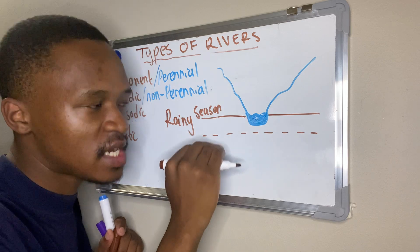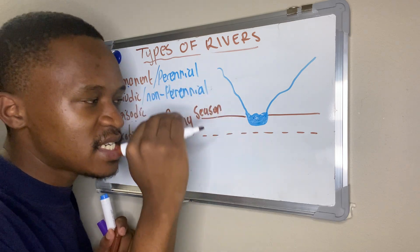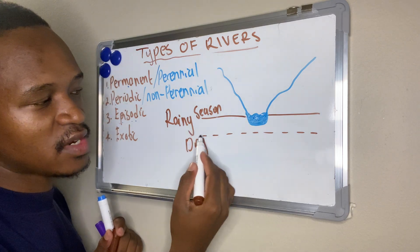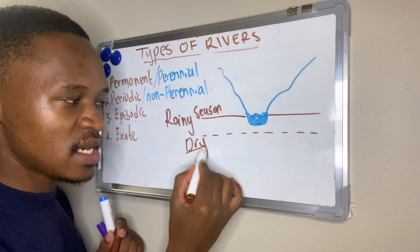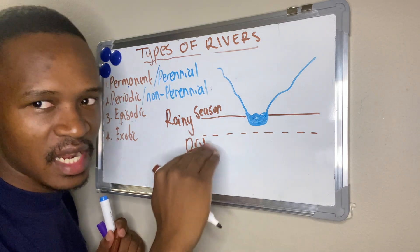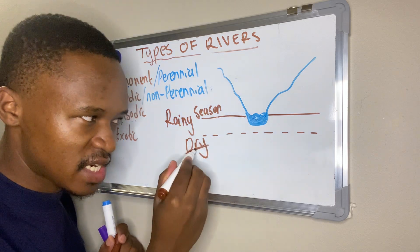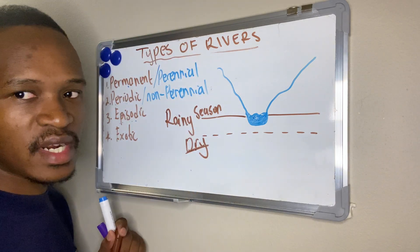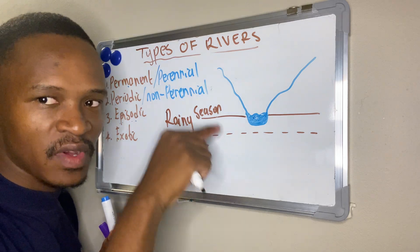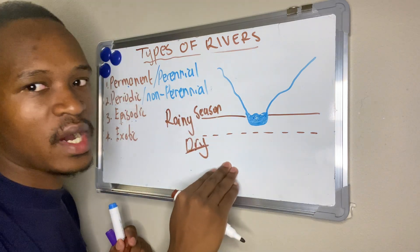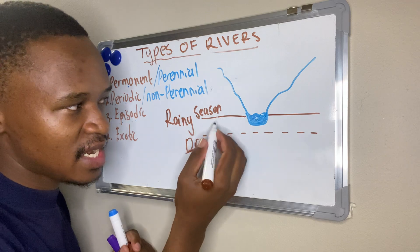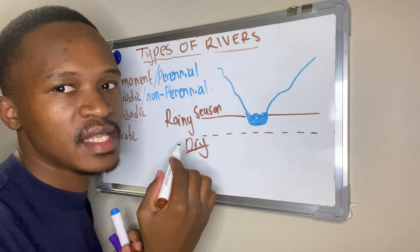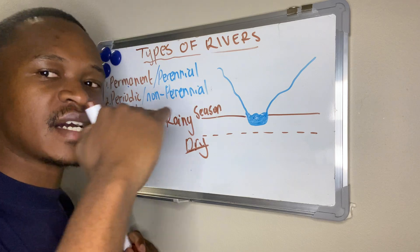But during dry seasons, this dotted or dashed line shows the water table — the level of the groundwater during dry seasons. During dry seasons, obviously there will be less water going into the ground, hence the water table or level of groundwater will be lower. This brown line here is showing us the water table, the upper level of the groundwater.